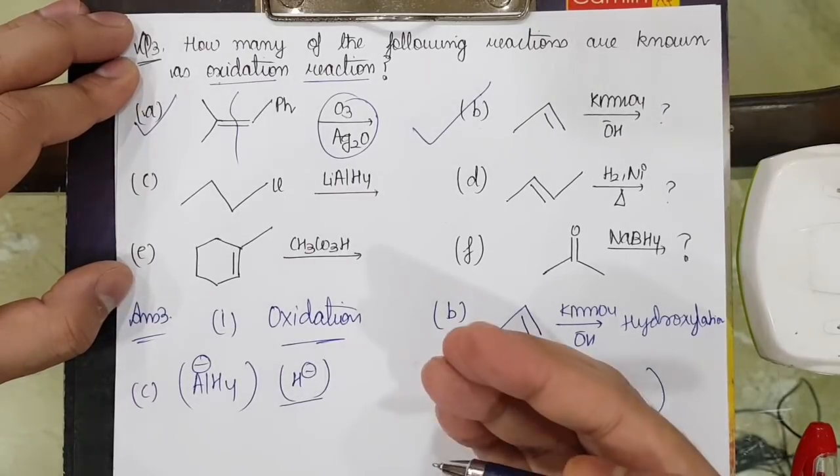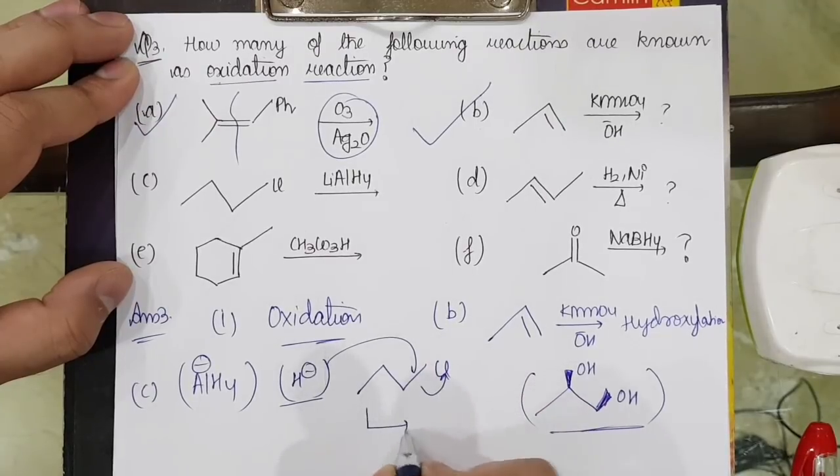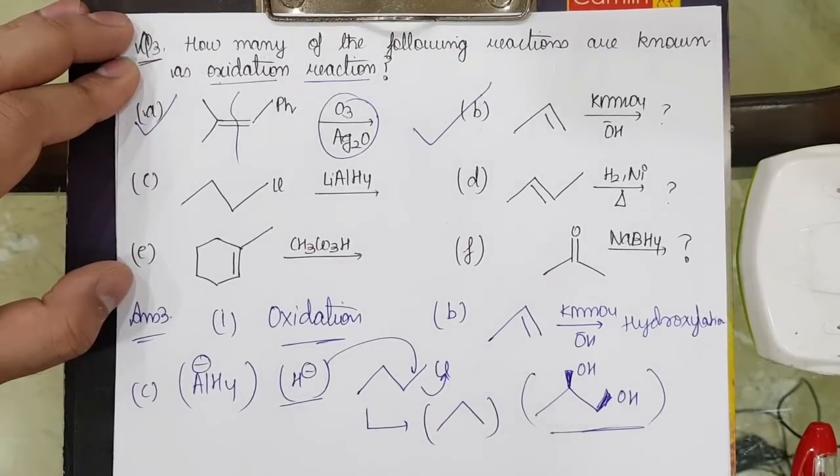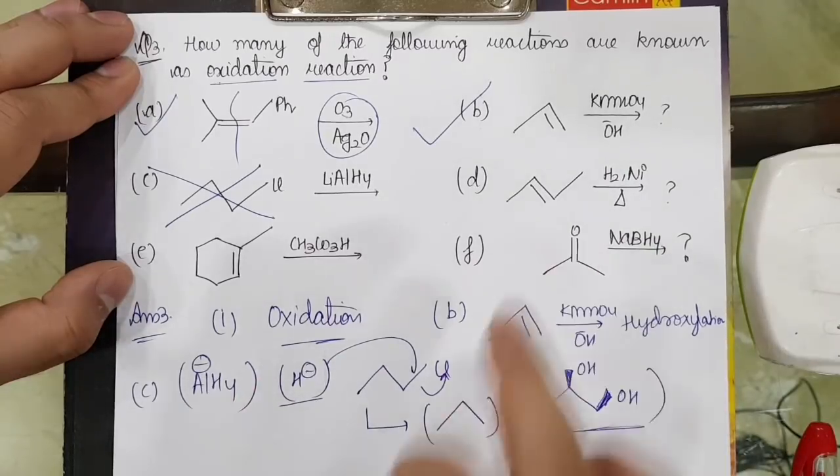Now number C, what is it? LiAlH4. LiAlH4 means AlH4 minus to be more exact, but in general terms we can write this as H minus only, hydride donor. So what will this do? This will go, take out the Cl from here, giving me the formation of alkane as the major product. So this is a reduction reaction.